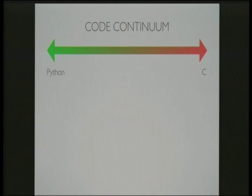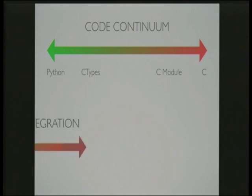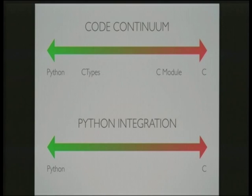We can visualize these differences on a code continuum. A project written purely in Python sits on the left, and a project written purely in C sits on the right. ctypes sits maybe around the middle — if you've already got a C library compiled in the right way, you don't have to write any C at all. A C module sits further right because you have to write a lot more C. But in terms of integration with Python, it's a different story: the C module is very well integrated, while ctypes sits far to the right because you're dependent on what your C library provides.